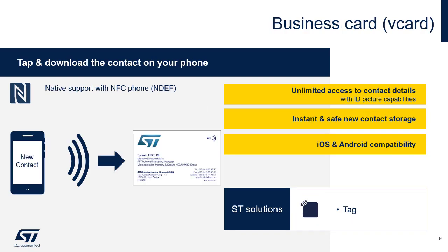Another useful example of a pre-defined NDEF Message is for the exchange of contact information. With a simple tap of a phone to an NFC-enabled business card, one could store another person's contact information automatically into their phone.